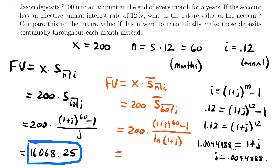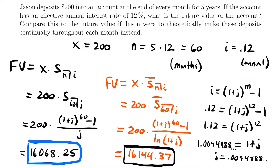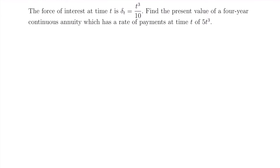Plugging J into this formula gives a future value of $16,144.37. That is the future value of the annuity if it were a continuous annuity rather than a regular annuity immediate. Now let's look at a different example of calculating a continuous annuity. For our next example, the force of interest at time t is delta_t equals t³ divided by 10.